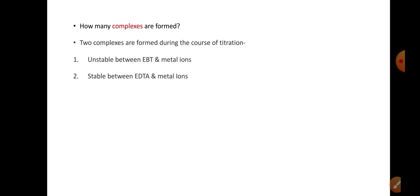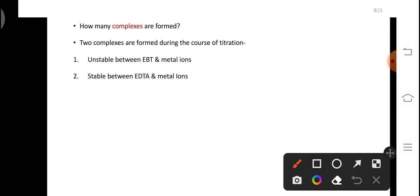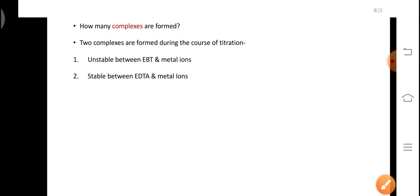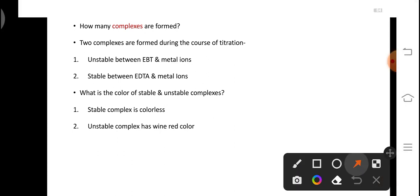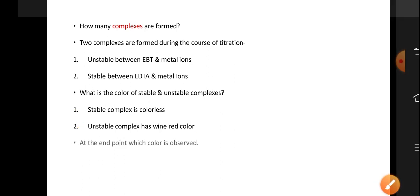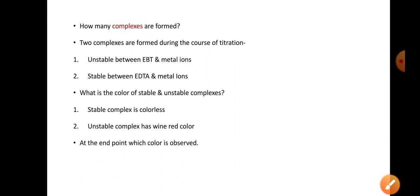How many complexes are formed? In this titration we get two types of complexes: unstable complex between indicator and metal ion, and stable complex between EDTA and metal ion. What is the color of stable and unstable complex? Stable complex is colorless, whereas unstable complex has wine red color. At the end point, which color is observed? At the end point we observe blue color. This is due to the free EBT.